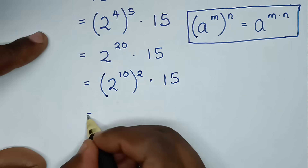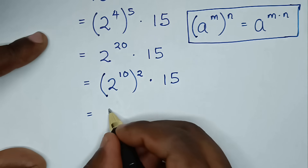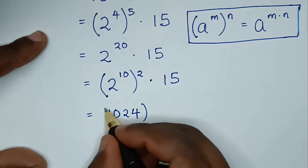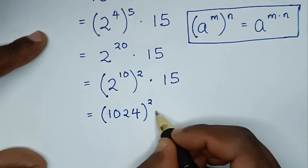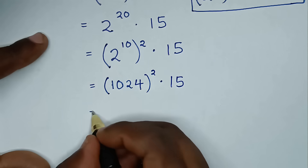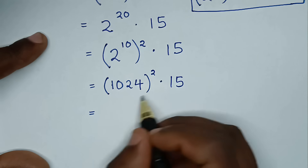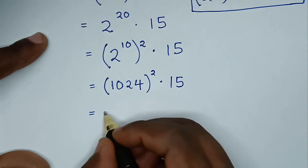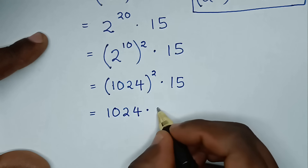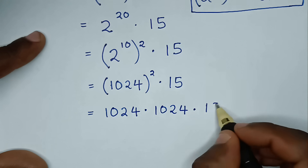Then it will be equal to, from here 2 power of 10 — we know that 2 power of 10 is 1024. Then bracket this square times 15. Then it will be equal to 1024 bracket square, which is the same as 1024 times 1024, then times this 15.